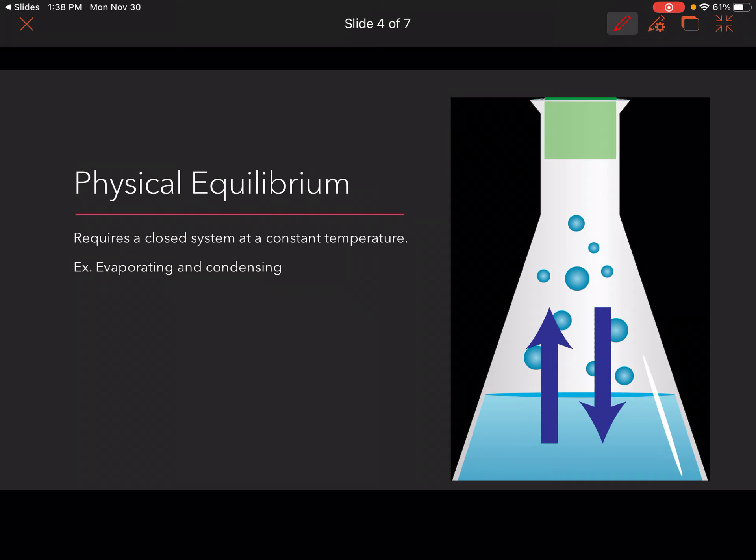So physical equilibrium. This requires a closed system at a constant temperature. So an example of this would be evaporating and condensing. So we've seen this diagram before. This would be, you know, the arrow going up is our evaporation. The arrow going down is our condensing of the water molecules there. And so here though, the important thing to remember is that the rate of evaporation is going to be equal to the rate of condensation. So when those two rates are the same, that's when we have an equilibrium. So it doesn't mean that the particles in each state are the same. That's not what that's saying. But just the rate at which they're changing is equal to each other.